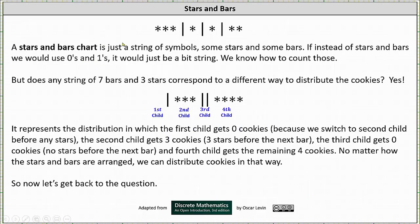A stars and bars chart is just a string of symbols, some stars and some bars. If instead of stars and bars we used zeros and ones, it would just be a bit string, and we know how to count those. But does any string of seven bars and three stars correspond to a different way to distribute the cookies? Yes.